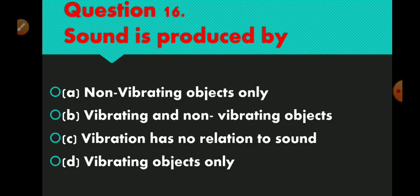Question number 16 is: sound is produced by. Option A non-vibrating objects only, option B vibrating and non-vibrating objects, option C vibration has no relation to sound, and option D vibrating objects only. The right answer is option D — vibrating objects only.